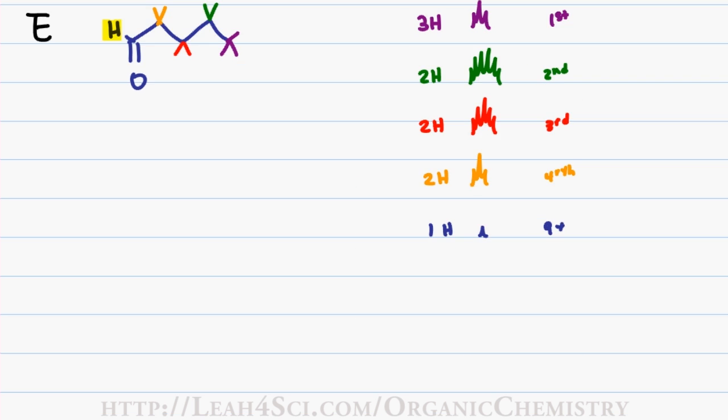Now let's see what this would look like. Put a zero on the right and follow the colors accordingly. We'll start with a purple triplet, a green sextet, a red quintet, an orange triplet, and last but not least, a small peak all the way to the left. This is the graph that you would expect for the aldehyde.